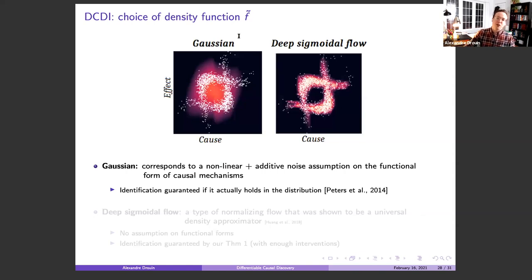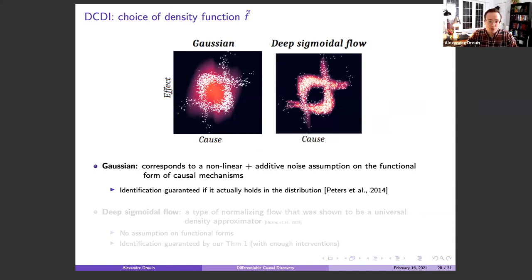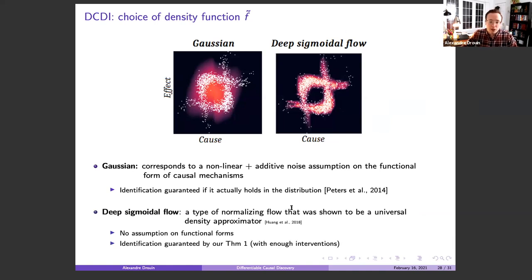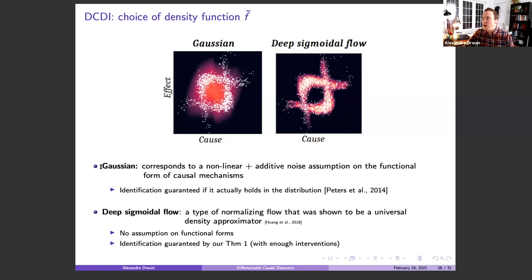For the density functions we use two types. First, a Gaussian one where we predict the mean and variance — this corresponds to a nonlinear additive noise assumption on causal mechanisms, guaranteeing identification if it actually holds in the data. We call this DCDI-G. We also consider deep sigmoidal flows — a type of normalizing flow shown to be universal density approximators. This is DCDI-DSF. In the Gaussian case we make a strong functional form assumption; in the DSF case we don't. With DCDI, this is fine because Theorem 1 guarantees that with enough interventions we identify the true graph, so we don't necessarily need the nonlinear additive noise assumption.